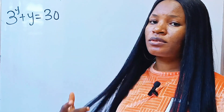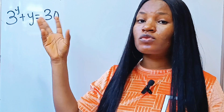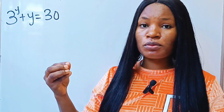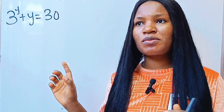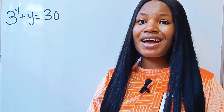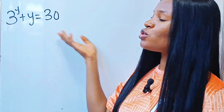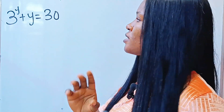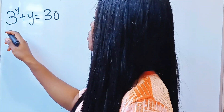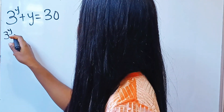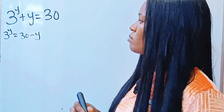This is not your regular algebra question — you cannot solve this with just the knowledge of algebra. Welcome to today's class. I'm going to introduce a very nice function we'll use to solve this. First, let's leave the power alone and shift terms to the other side, so we have 3 to the power of y is equal to 30 minus y.